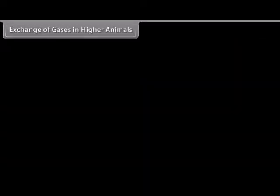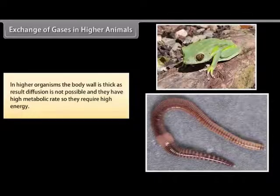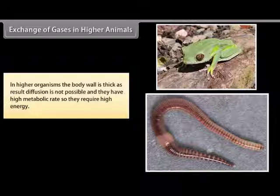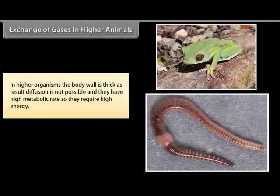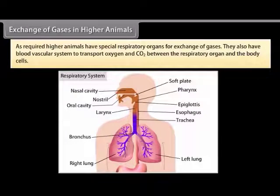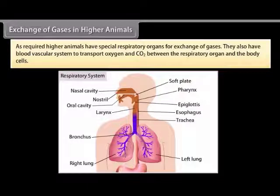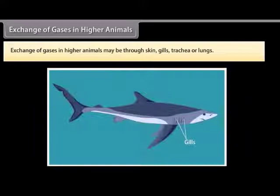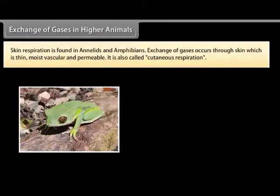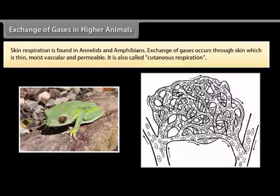In higher organisms, the body wall is thick, so diffusion is not possible, and they have a high metabolic rate requiring high energy. Higher animals therefore have special respiratory organs for exchange of gases and also a blood vascular system to transport oxygen and CO2 between the respiratory organ and body cells. Exchange of gases in higher animals may be through skin, gills, trachea, or lungs. Skin respiration is found in annelids and amphibians — gases exchange through skin which is thin, moist, vascular, and permeable. It is also called cutaneous respiration.